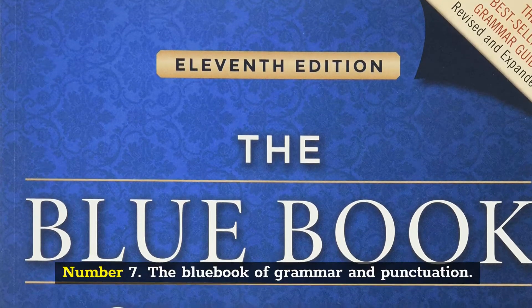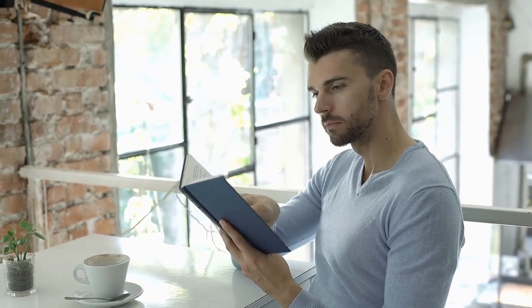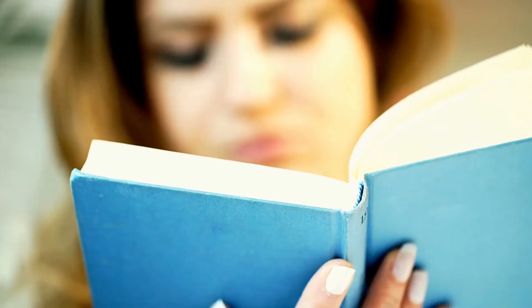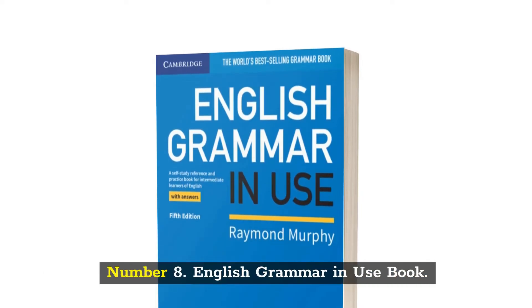Number seven: The Blue Book of Grammar and Punctuation. The 11th edition of The Blue Book of Grammar and Punctuation has just been released. People who have used the book's earlier editions will appreciate how it has been improved. A concise grammar reference, the book also emphasizes punctuation and usage. The three authors are Tom Stern, Lester Kaufman, and Jane Strauss.